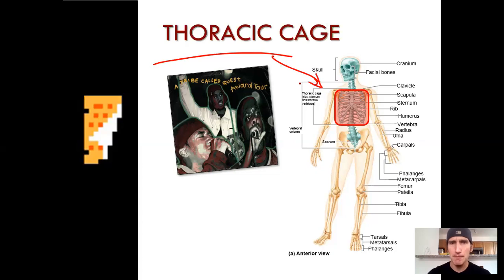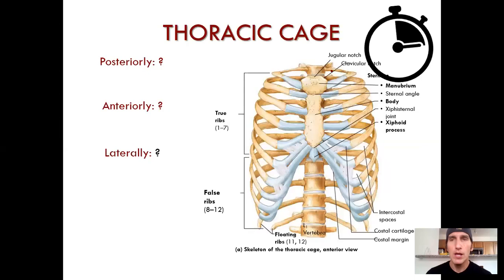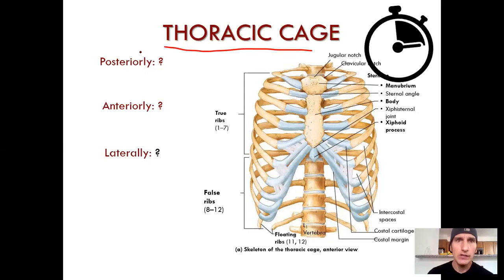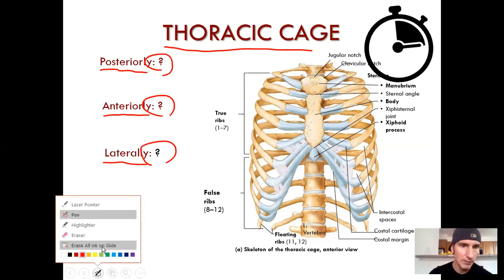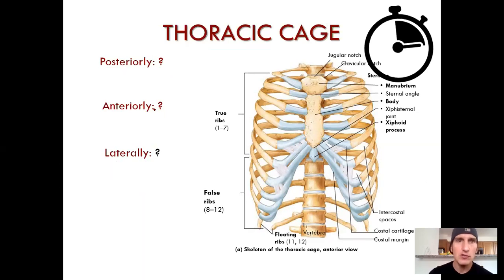Get ready to pause the video and put some thought into the following questions: What does the thoracic cage consist of posteriorly, anteriorly, and laterally? What are the components of the thoracic cage? Look at the picture right here — pause the video, answer those three questions, and I'll be right back.